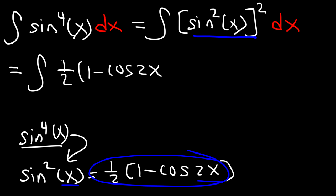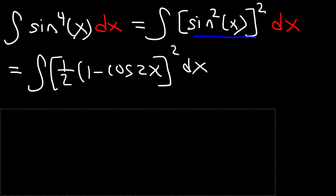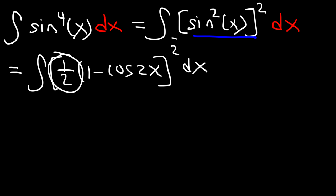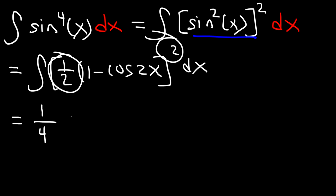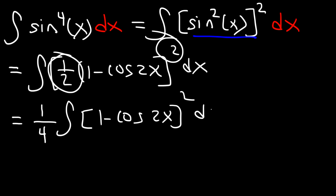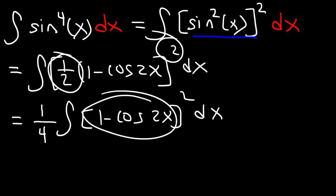The first thing we're going to do is square the fraction: one half squared. I'm going to move that result to the front of the integral sign. 1 squared is 1 and 2 squared is 4, so we have one fourth times the integral of (1 minus cosine 2x) squared. We'll need to expand this expression before we can integrate it.